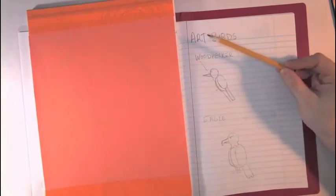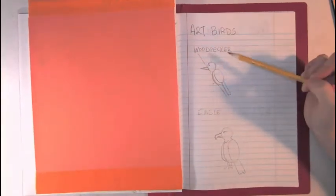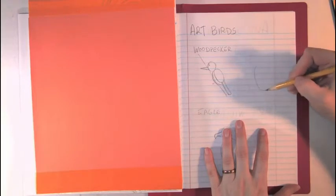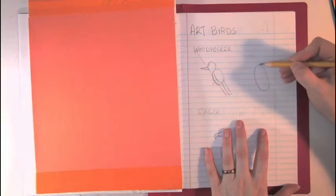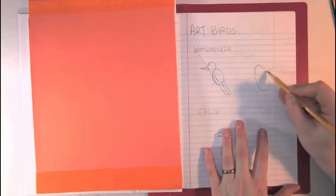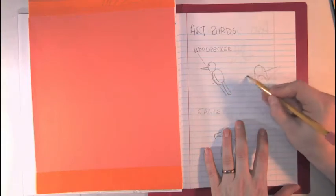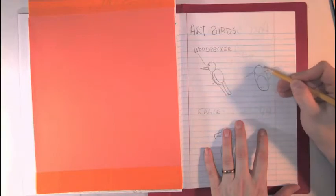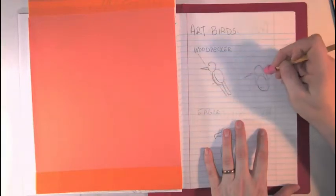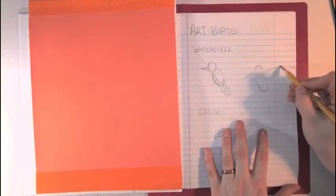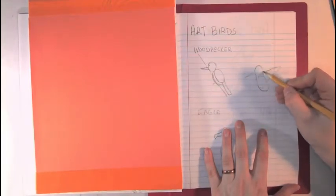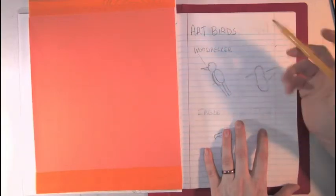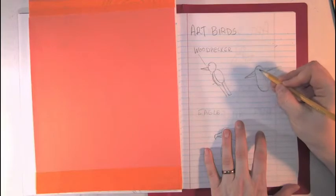I wrote the words art birds. You guys don't need to worry about that side. That's what third grade was working on. So I drew the word, or I wrote the words art birds, and then I drew a woodpecker. I drew my eagle, and then I'm now going to draw, just real fast to show you, but we're going to do more. Don't worry. Start off with the triangle. Make that long beak. You've got teeny little feet.